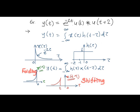Followed by that, sketch x of tau and h of tau by changing the variable t in both the signals to tau.